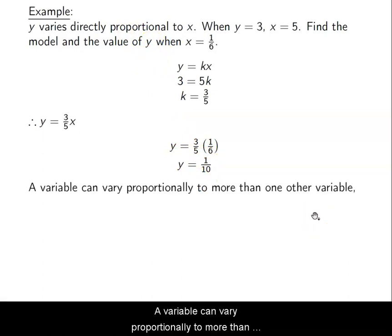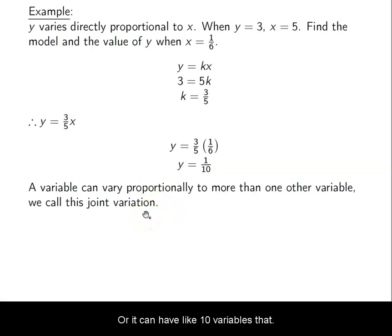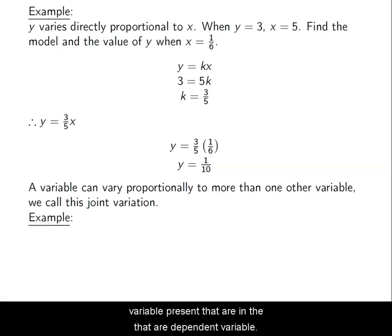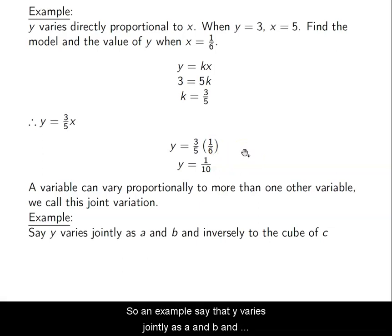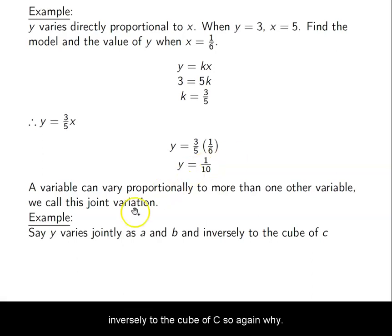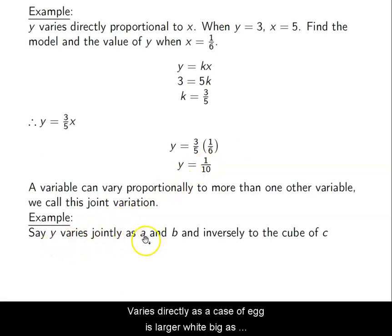A variable can vary proportionally to more than one other variable. Meaning it can vary directly to one variable and inversely to another variable. Or it can have like 10 variables that it varies with. We call this joint variation. When there's more than one variable present that our dependent variable varies in proportion to. So an example, say that y varies jointly as a and b and inversely to the cube of c. So again, y varies directly as a. So if a gets larger, y gets larger. If b gets larger, y gets larger. If c gets larger, then y gets smaller.